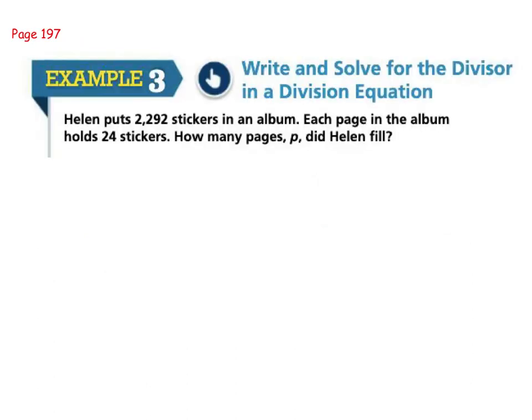Let's take a look at example three. Helen puts 2,292 stickers in an album. Each page in the album holds 24 stickers. We want to know how many pages did Helen fill. Well, the way I usually think about this is, she had 24 stickers on one page. You would have to multiply that by the number of pages, so 24 times P, and that would total up to my total number of stickers, 2,292.